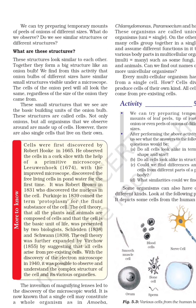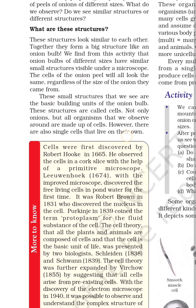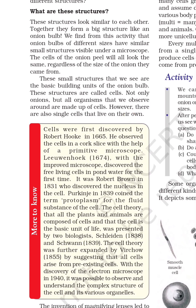We can try preparing temporary mounts of peels of onions of different sizes. What do we observe? Do we see similar structures or different structures? These structures look similar to each other. Together they form a big structure like an onion bulb. We find from this activity that onion bulbs of different sizes have similar small structures visible under a microscope.